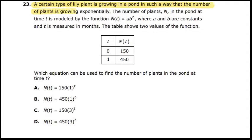That means that we are not going to use y equals mx plus b. The number of plants, n, in the pond at the time t, is modeled by the function n of t is equal to a times b to the t power, where a and b are constants, and t is measured in months.